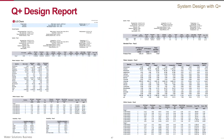Designing a system using the software involves multiple iterations that may be required to come up with the optimal design that is free of warnings. Once the user is satisfied with the design, a detailed report can be generated, as shown here. The report contains all individual element performance data, stream compositions, salt concentrations, etc.